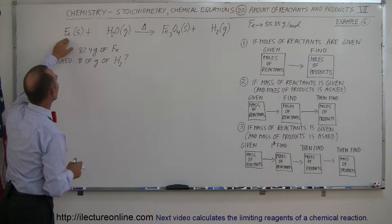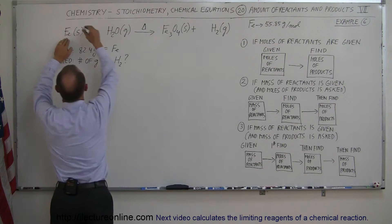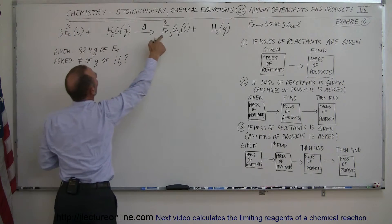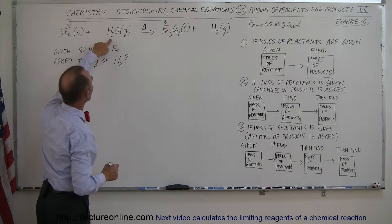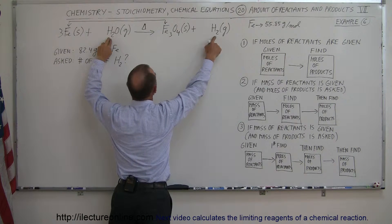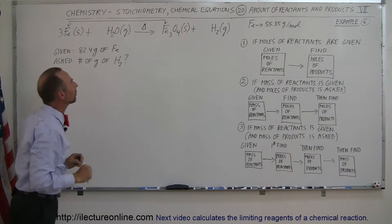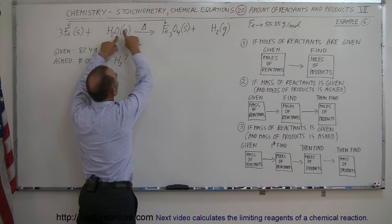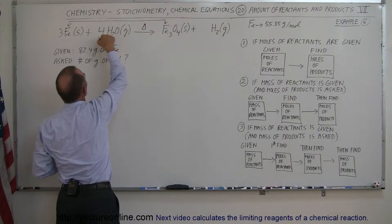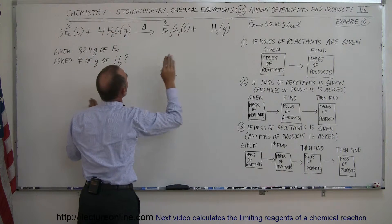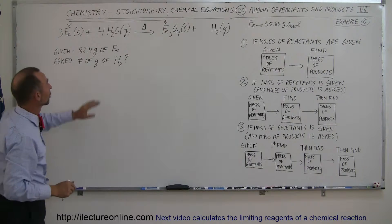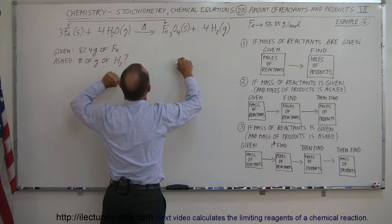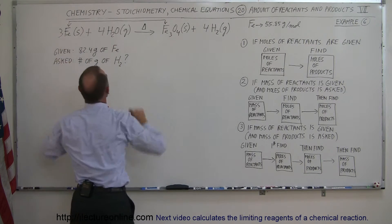We have one mole of iron on the left and three moles of iron on the right, so we need a three-to-one ratio — three of these will form one of those. Hydrogen H2 appears on both sides, so hydrogen is balanced, but oxygen is not. We have one oxygen on the left and four on the right, so we need a coefficient of four on the left. Now oxygen is balanced, but hydrogen is no longer balanced — we have eight hydrogens on the left and only two on the right, so we need a coefficient of four there. Now hydrogen, oxygen, and iron are all balanced.